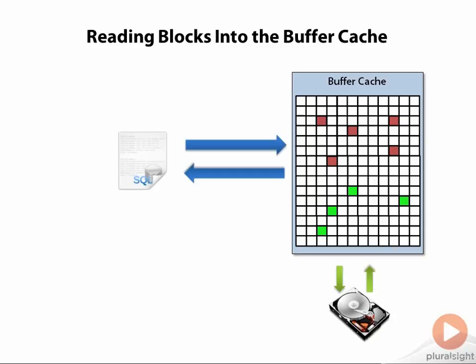You may have experienced this yourself at times. If you have ever executed the same SQL statement twice in a row, you've probably observed that the first time you ran your statement, it may have taken a second or two to execute. But on the second execution, you got your results back almost immediately. There are a couple of items at work here, but the biggest factor is the buffer cache. The first time you executed your SQL statement, Oracle probably had to perform some physical I/O to get the data that you needed. But when you executed the statement the second time, the data was already in the buffer cache, so Oracle could return your results much faster.